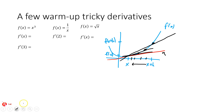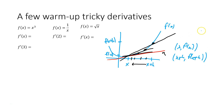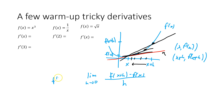We find the tangent slope by using slopes of lines approaching it. Starting with the slope through f of x and f of x plus h, we bring that point closer and closer, making h get smaller and smaller, so we're taking a limit as h gets as small as possible. The slope between the two points is f of x plus h minus f of x divided by h, and we want the limit as h goes to 0. This is the derivative: f prime of x equals the limit as h approaches 0 of [f(x+h) - f(x)] / h.